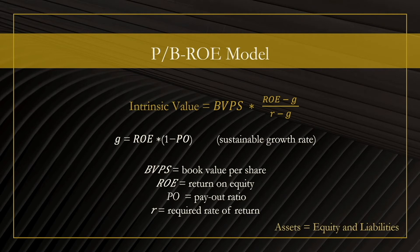In broad terms, you can think about equity as money shareholders lend to the company. With that, we can now explain ROE, or return on equity. For example, if the company generates $100,000 in profits in a year and it has $1 million in equity, then ROE is 10%. The 10% is simply return divided by equity, and that is also why it's called return on equity.